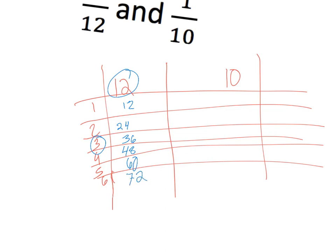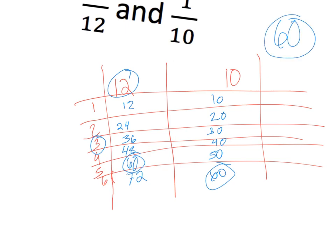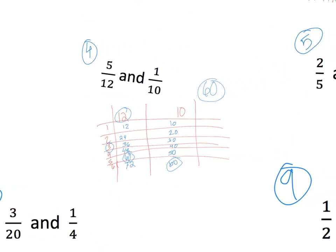So we have our tens — this is pretty easy. Twenty, thirty, forty, fifty, and finally sixty. Sixty is in both columns, so sixty is going to be my least common denominator there.